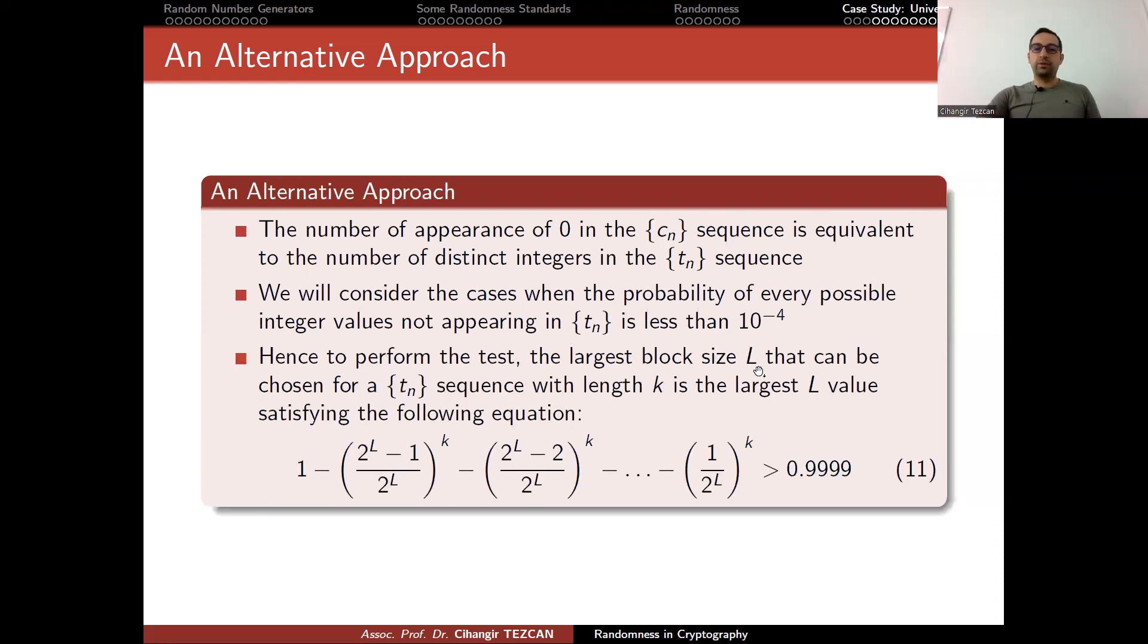The number of appearance of zero in the sequence is equal to number of distinct integers. We will consider the cases when the probability of every possible integer value not appearing in T_N is less than this value. So we assume that everything appears at least once. Hence, to perform the test, the largest block size L that can be chosen for the sequence with length K is the largest L value satisfying the following equation.